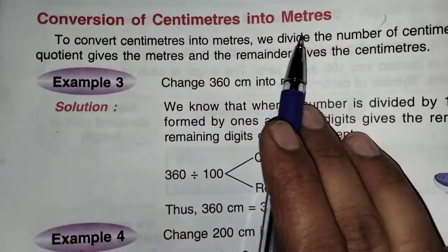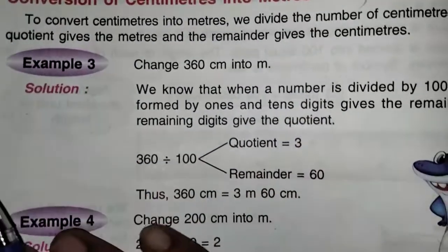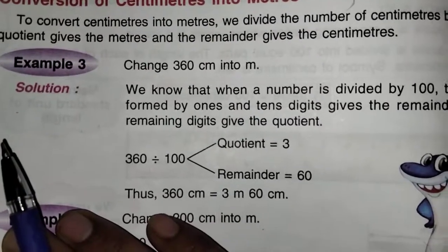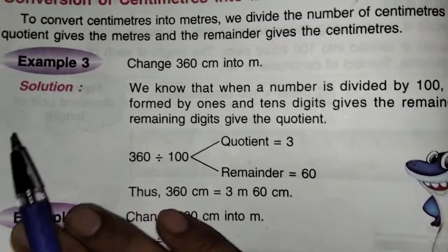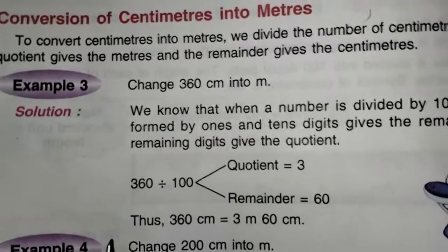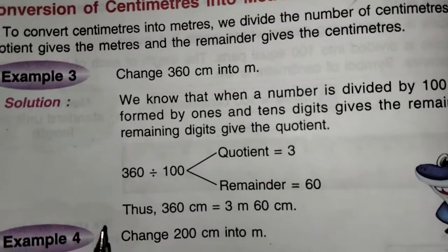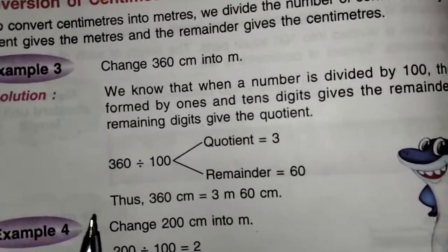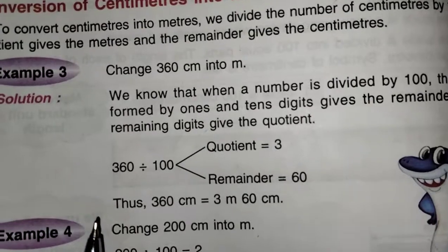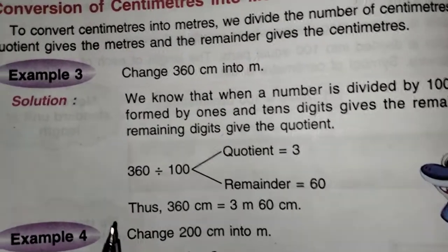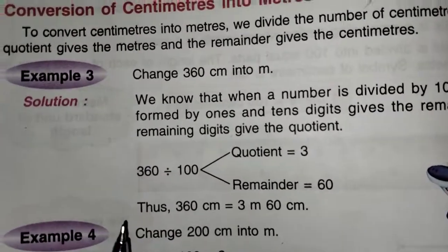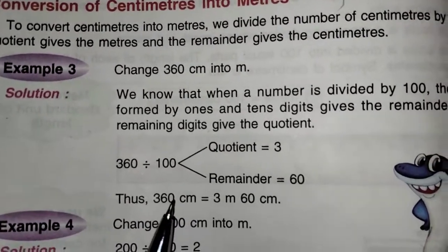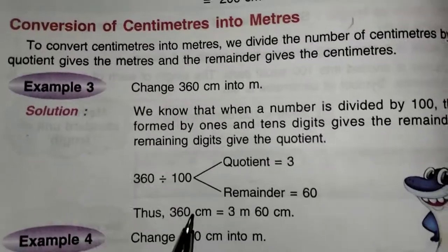Conversion of centimeter into meters: whenever you are converting centimeter into meter, you have to divide by 100, because 1 meter is equal to 100 centimeters. So 400 centimeters divided by 100 equals 4 meters. Whenever we start all the examples, that time we can understand better, children. I hope today's explanation you understood.